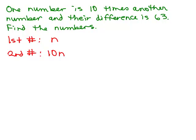Now, what else does it tell us about these numbers? It says their difference is 63. Remember, difference means subtract. That's how we're going to get our equation. We're going to subtract the two numbers and get 63. Now, to subtract two numbers and get 63, you're going to have to do the bigger number minus the smaller number.